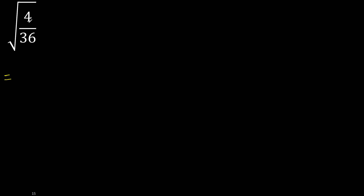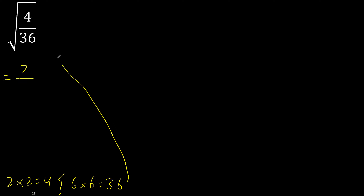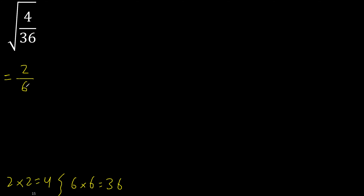Find 2 equal numbers that multiply to 4: 2 multiplied by 2 is 4, therefore the square root of 4 equals 2. For 36: 6 multiplied by 6 is 36, therefore the square root of 36 equals 6.